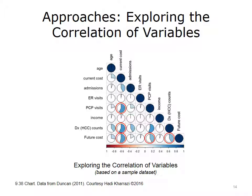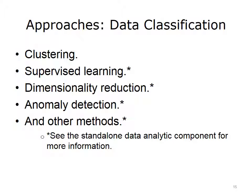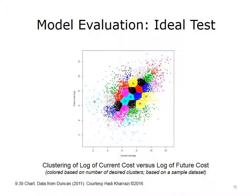As depicted in this diagram, there seems to be a higher-than-usual correlation between current cost and primary care physician visits, as well as a number of diagnostic counts. Data classification methods can be useful to reduce the dimensionality of population health data. For example, clustering methods can be used to find similar denominators of a population for a given list of variables. This diagram shows a scatter plot of log-transformed current cost versus log-transformed future cost of a given population denominator. The automated clustering method has found a number of clusters, identified by various colors.